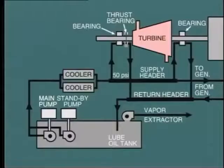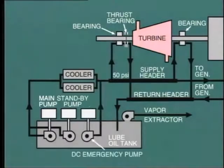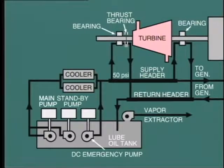In order to prevent this potential disaster, many machines are equipped with a DC oil pump, which would be fed from the station battery in such an emergency.